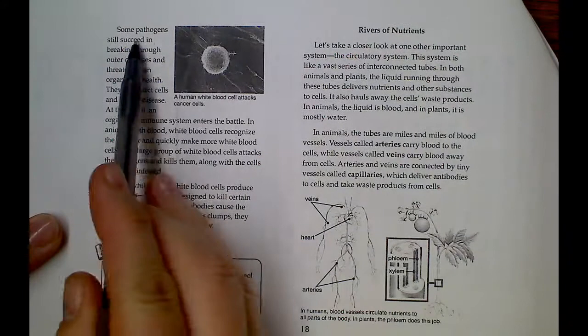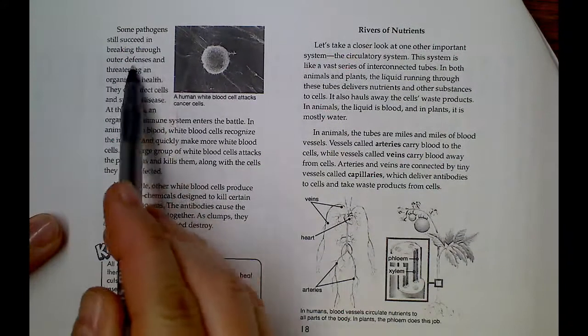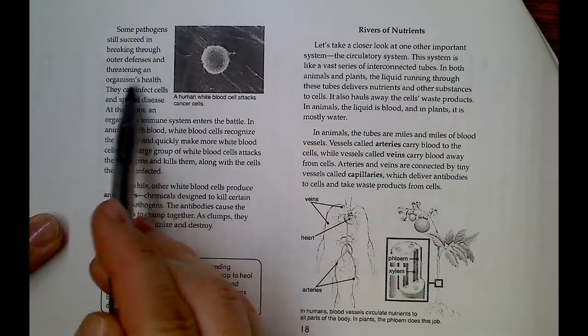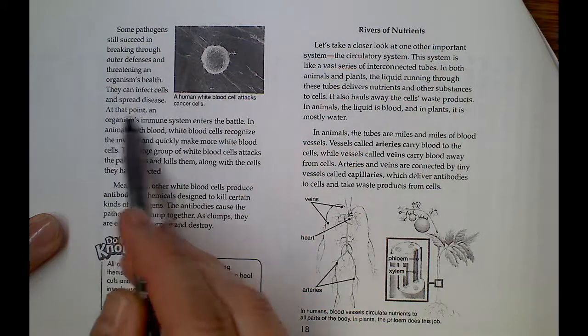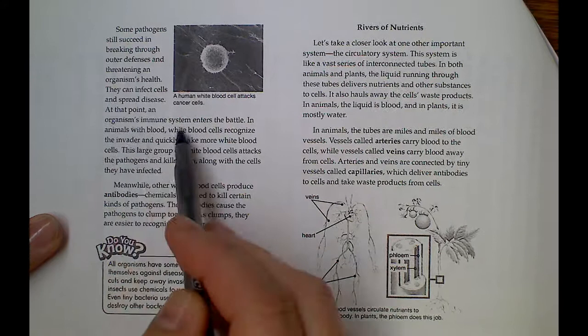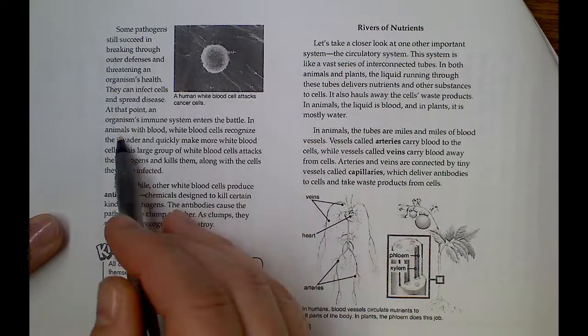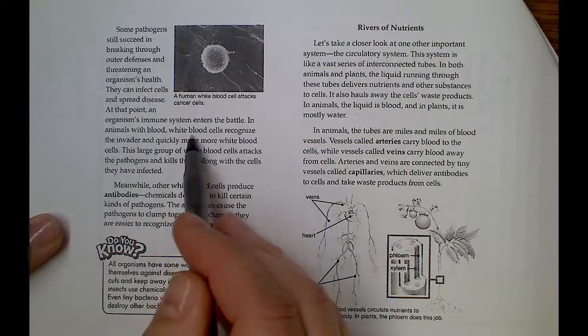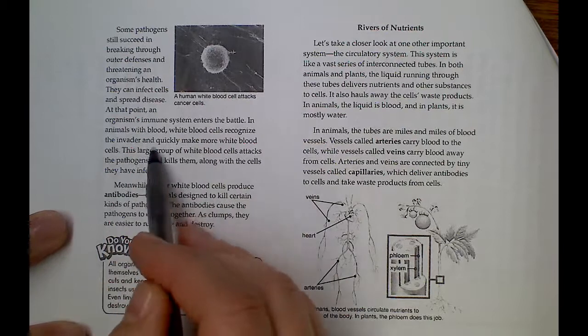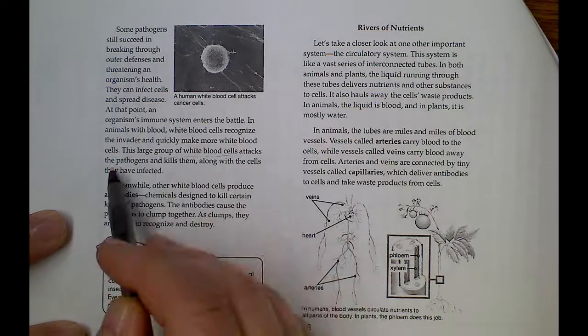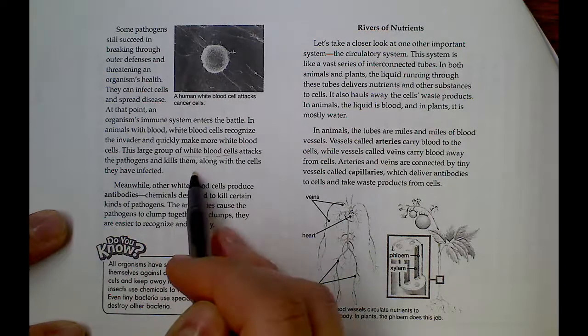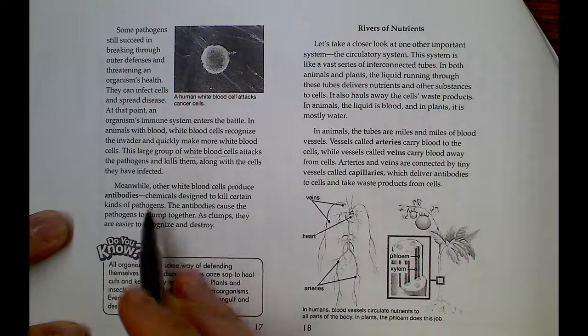Some pathogens still succeed in breaking through outer defenses and threatening an organism's health. They can infect cells and spread disease. At this point, an organism's immune system enters the battle. In animals with blood, white blood cells recognize the invader and quickly make more white blood cells. This large group of white blood cells attacks the pathogens and kills them along with the cells they have infected.